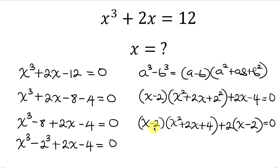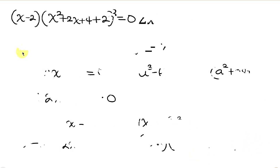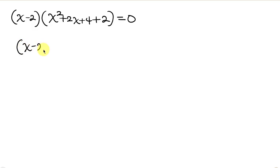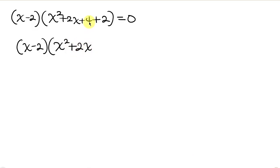Notice that (x minus 2) is common, so we can factor it out. We get (x minus 2) times [(x squared plus 2x plus 4) plus 2], equal to 0. This simplifies into (x minus 2)(x squared plus 2x plus 6) equal to 0.